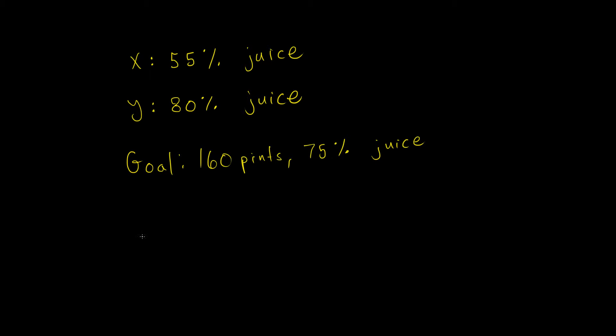So however much I add to achieve our goal is always going to be 0.55 times X, where 0.55 is the 55% real juice. And X is going to be the amount of juice A, of the first type of juice that we add.